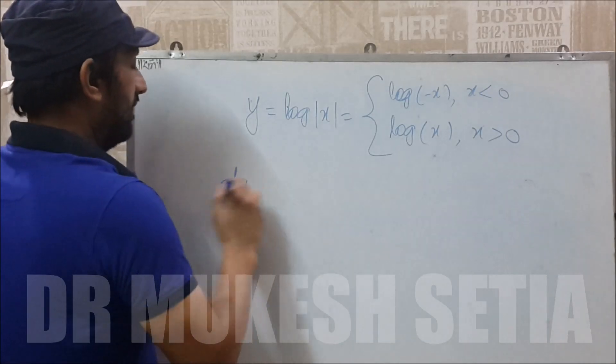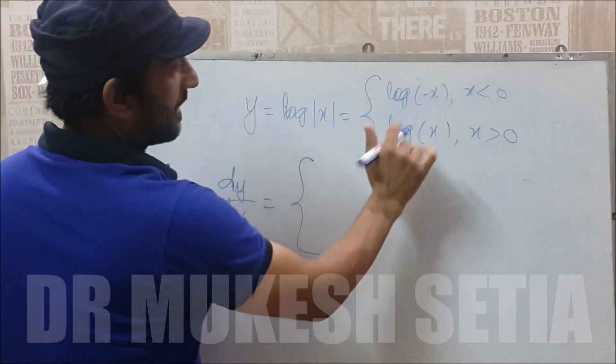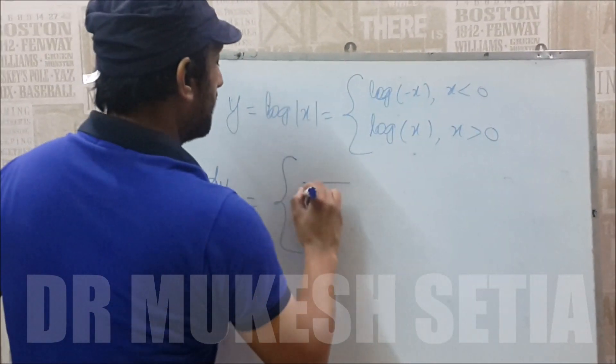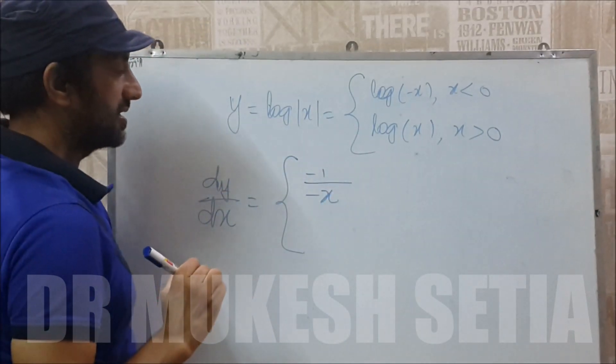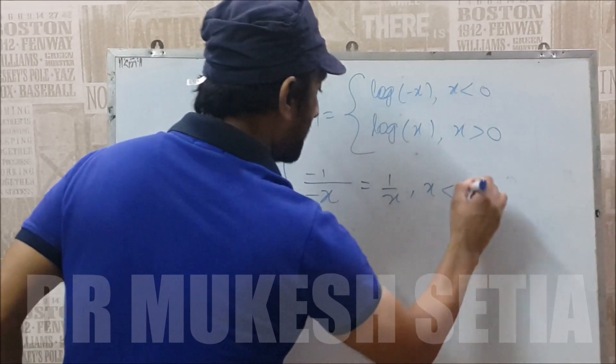Now when we write the derivative, the derivative of the first branch will be for all the negative numbers, that is x less than 0. So its derivative will be 1 upon minus x and the derivative of minus x is minus 1, which is 1 by x when x is a negative quantity.